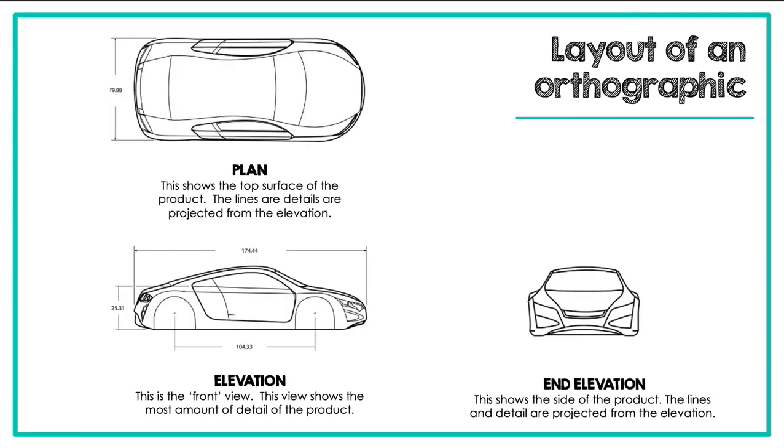A standard layout of an orthographic is three different views. You have your elevation, which is the front view and that view shows the most detail of the product. In this case we have a car. Even though the front of the car you would think would be the front view, the side of the car actually has the most detail. So that is why that is our front view, that is our elevation. The front of the car then becomes the end elevation. The end elevation is the side of the product. So if I had to walk around the car and view it from the side, that would be your end elevation.